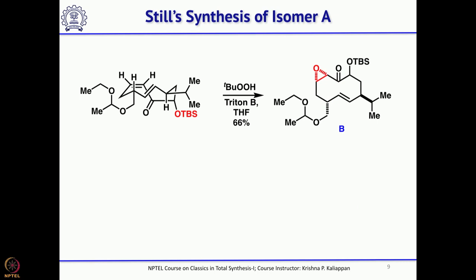He then did the epoxidation. Since it is an electron-deficient double bond, you can use t-butyl hydroperoxide and Triton B. Looking at this compound, the epoxide will come from the backside, giving an alpha epoxide in the product. But for Periplanone B, the epoxide should be beta — what he obtained was alpha.